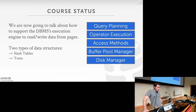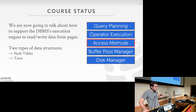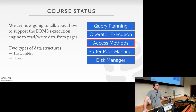In terms of the course, today we're going to start talking about how to support the DBMS's execution engine to read and write data from pages. We've been talking about the lower levels of the stack — now we're moving up to the access methods piece. We've covered the disk manager and buffer pool manager. The two fundamental data structures we'll cover in this course are hash tables and trees. Today we're talking about hash tables.